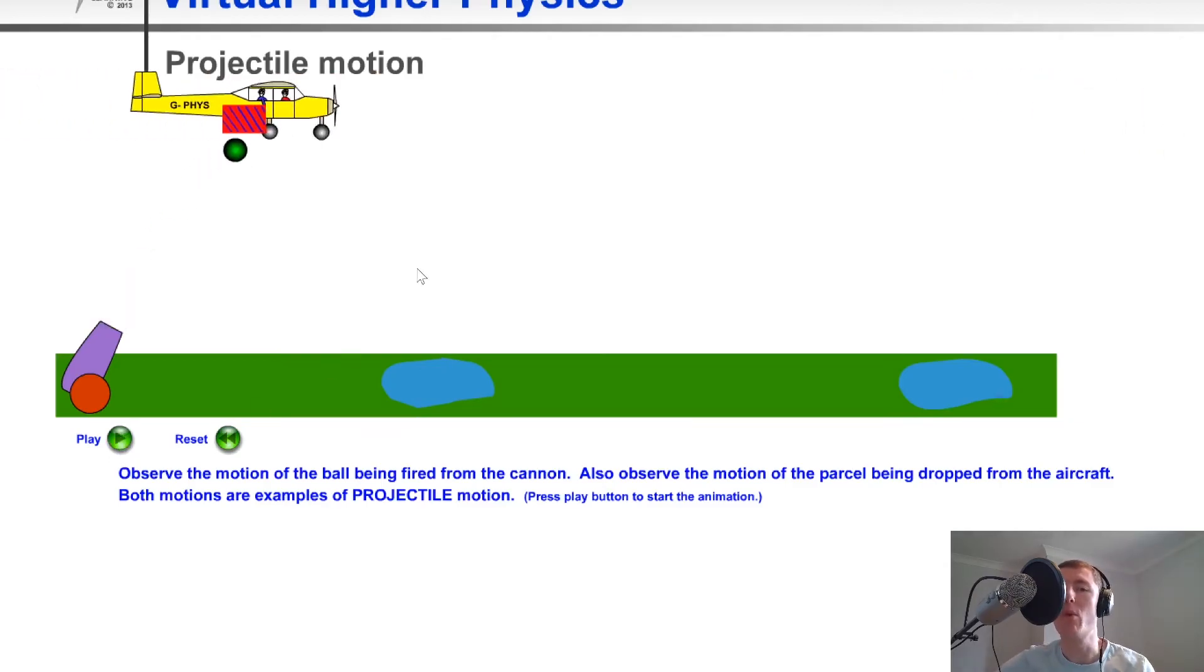Now it's worth pointing out that the motion for the object dropped from the plane is the kind of motion that you looked at at National 5 level when we thought about projectiles, where the motion of the projectile is sort of half a parabola. Whereas what we're now doing in the higher course is we're considering both types of motions. So we're considering half the parabola shape but also the full parabola like the cannonball with that full projectile motion.